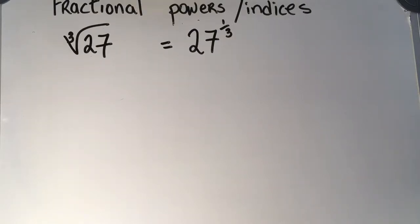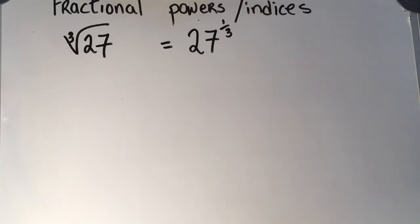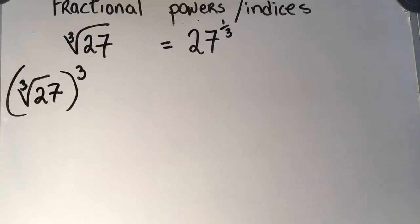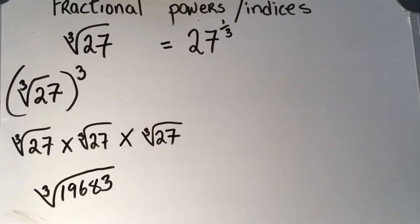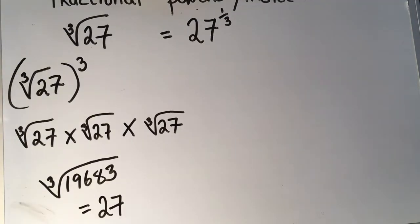I can also say the cubed root of 27 is equal to 27 to the power of 1 third. Let's do exactly the same thing. If I take the left-hand side and cube it, and take the right-hand side and cube it, we should get the same answer. The cubed root of 27 is 3, because 3 multiplied by itself 3 times gives 27. So the cubed root of 27 cubed means multiplying it by itself 3 times, giving the cubed root of 19,683, which equals 27.